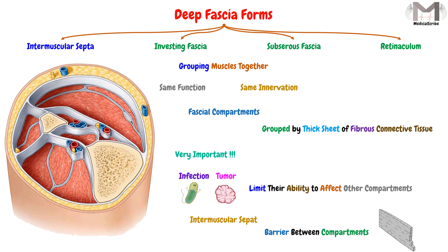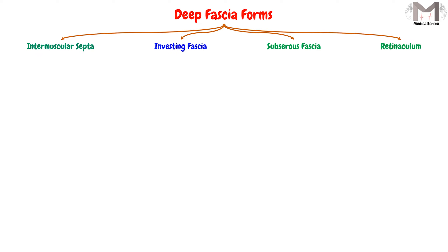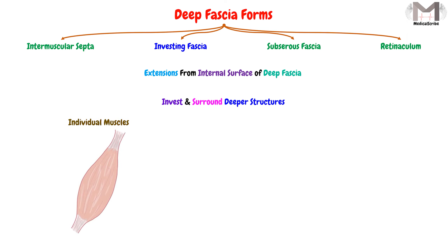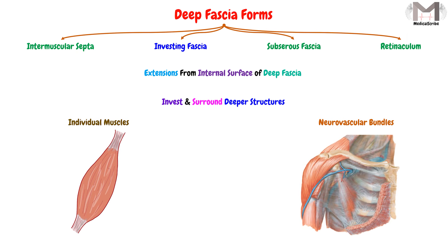The second form of the deep fascia is the investing fascia. This investing fascia consists of extensions from the internal surface of the deep fascia. It will invest and surround the deeper structures, such as investing individual muscles and surrounding neurovascular bundles.